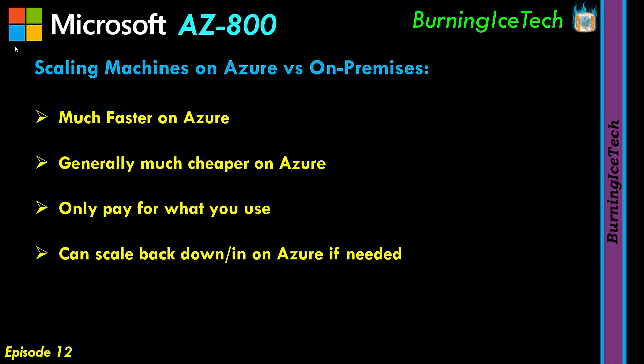Another point worth mentioning: you can have the whole scale up, scale out, scale back down, and scale back in process automated on Azure. Microsoft can automate the process for you. On-premises, you'd have to keep a hawk's eye on everything so your RAM doesn't run out and servers don't crash. In the cloud, it's someone else's problem — it is Microsoft's problem. For once, we can point the finger to someone else.